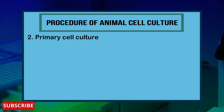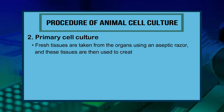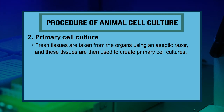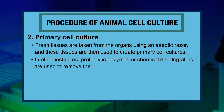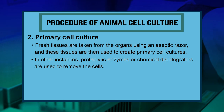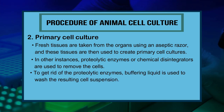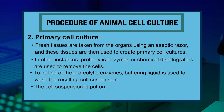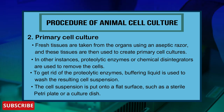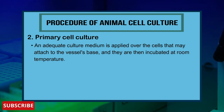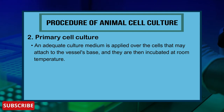For primary cell culture, fresh tissues are taken from organs using an aseptic razor. Proteolytic enzymes or chemical disintegrators are used to remove cells. Buffering liquids wash the resulting cell suspension to remove proteolytic enzymes. The cell suspension is placed onto a flat surface such as a sterile petri plate or culture dish. Adequate culture medium is applied and the cells are incubated at room temperature.